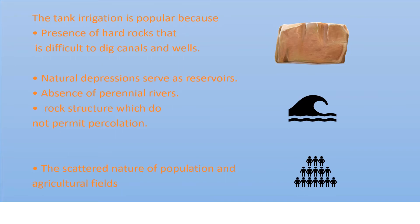The third reason is the absence of perennial rivers, so we have to save water. Fourth, rock structures do not permit percolation. Fifth, the scattered nature of population and agriculture fields. In areas where population and fields are scattered, we can make use of tank irrigation. That is why tank irrigation is very popular.